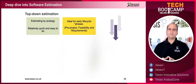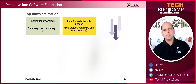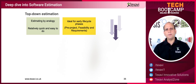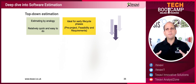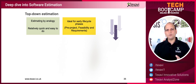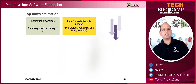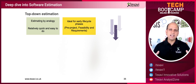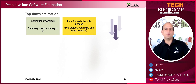Top-down estimation is really good for early lifecycle phases of a project. For example, if you're just about to start developing an e-commerce website, a web application, or a mobile application, this is a good place to start — you take a rough guess at the effort, size, and money needed. It could be used in pre-sales, before the project has started, or in the early stages of requirements capture.